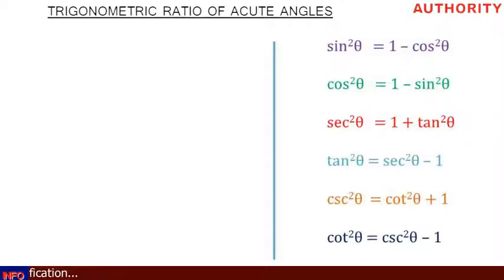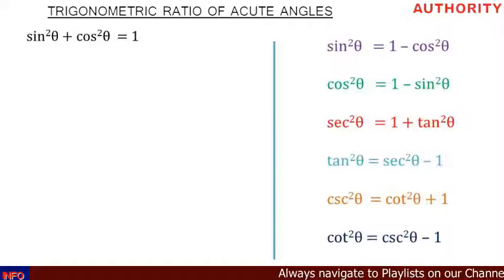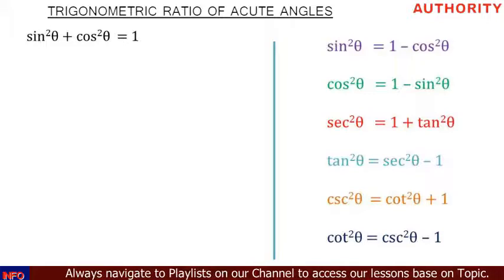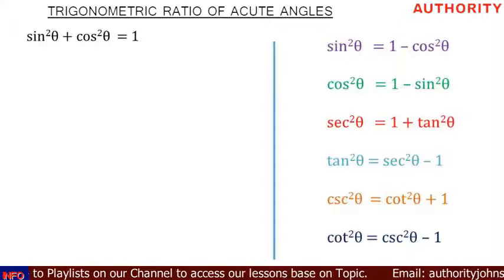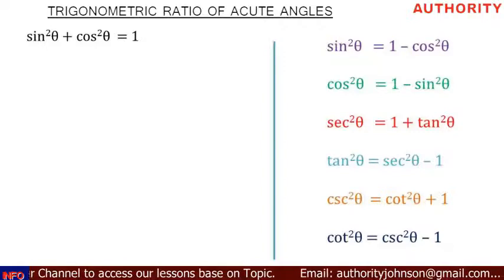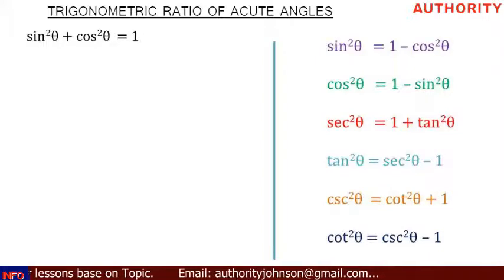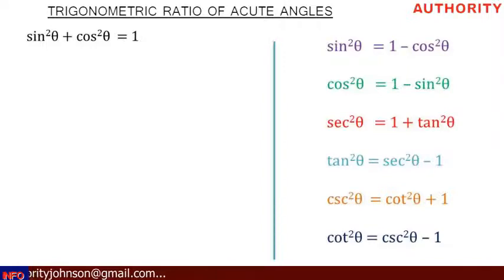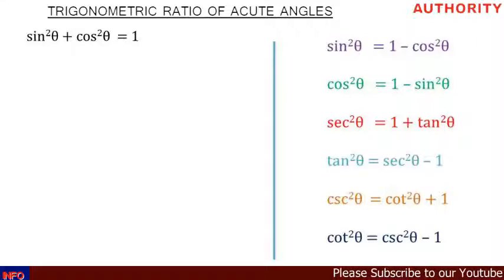The one thing I want you to know very well — get it in your head — is that sin²θ + cos²θ = 1. Even if someone wakes you from sleep, or even in your dreams, you must know that sin²θ + cos²θ = 1. Whenever you hear about Pythagorean identities or trigonometric ratios of acute angles, just remember that sin²θ + cos²θ = 1. This is the major formula. Once you know this, everything is settled.